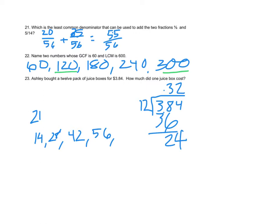Ashley bought a 12-pack of juice for $3.84. How much does each juice box cost? That's simple division. Make sure you're keeping track of the decimal. Each one is 32 cents. 12 goes into 38 three times, which gives me 36. Subtract and I get 2, bring down my 4. 12 goes into 24 twice.